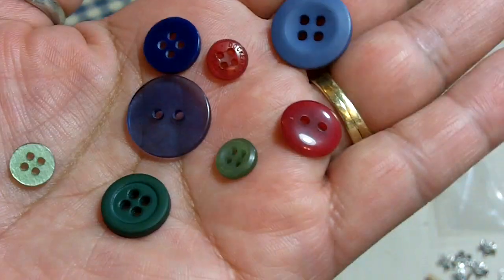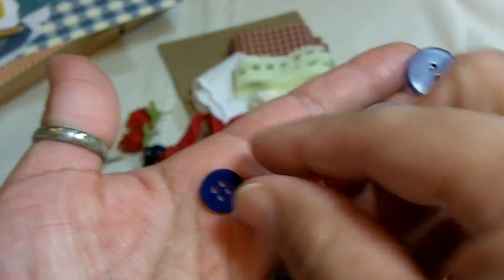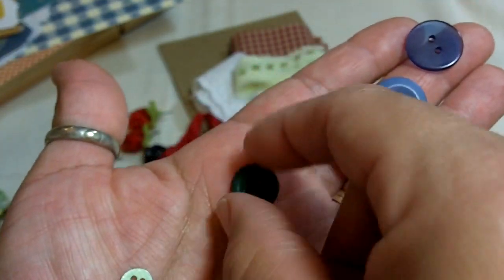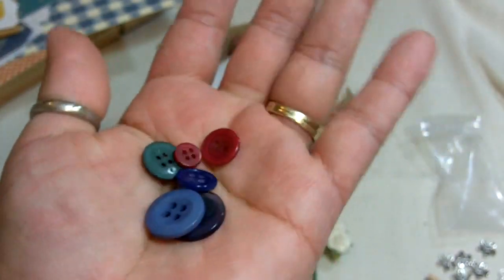And then just a variety of different buttons that I've had in my stash. And they are almost exactly the same for the kits. They're all pretty much the same. You get the same amount like this big blue one, two big blue ones, and then a couple of red ones, a little dark blue, the dark green, and then a couple of little green ones. So they're pretty much the same.